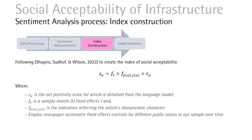Now we go to the index construction step, still following Shepardow and colleagues' work. In their work, they decompose the article's sentiment score into two parts: a systematic part and an idiosyncratic part. We view the systematic part as the component of the sentiment index, because each article will have its own characteristics and its own observations. The systematic part reflects the public opinion.